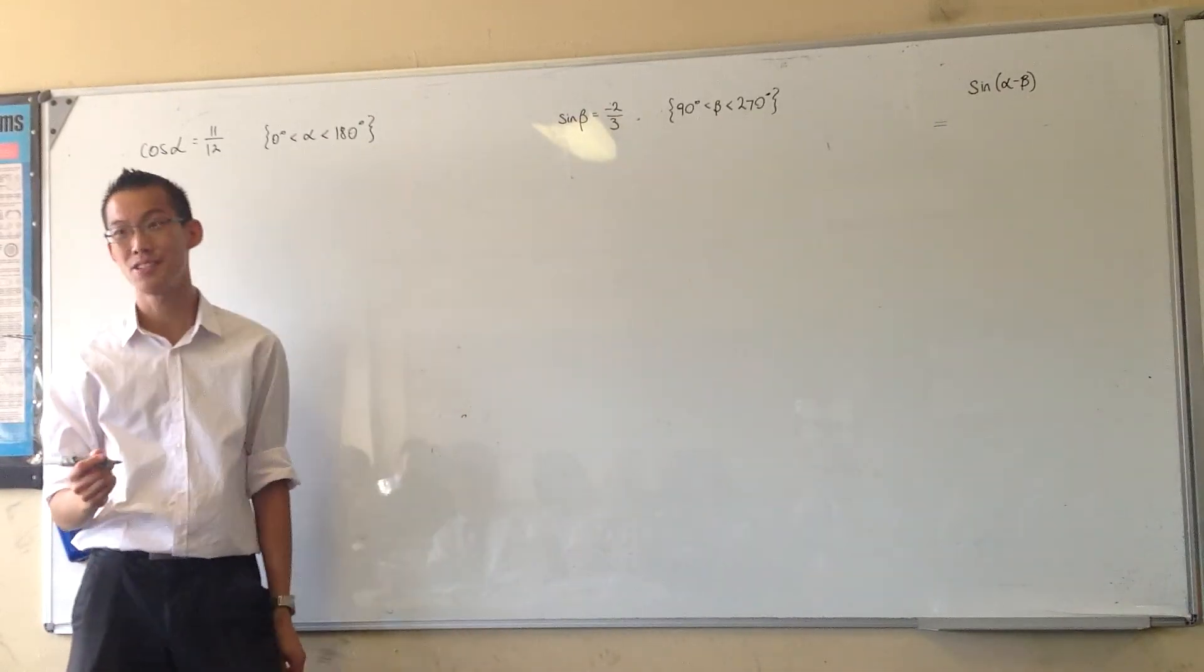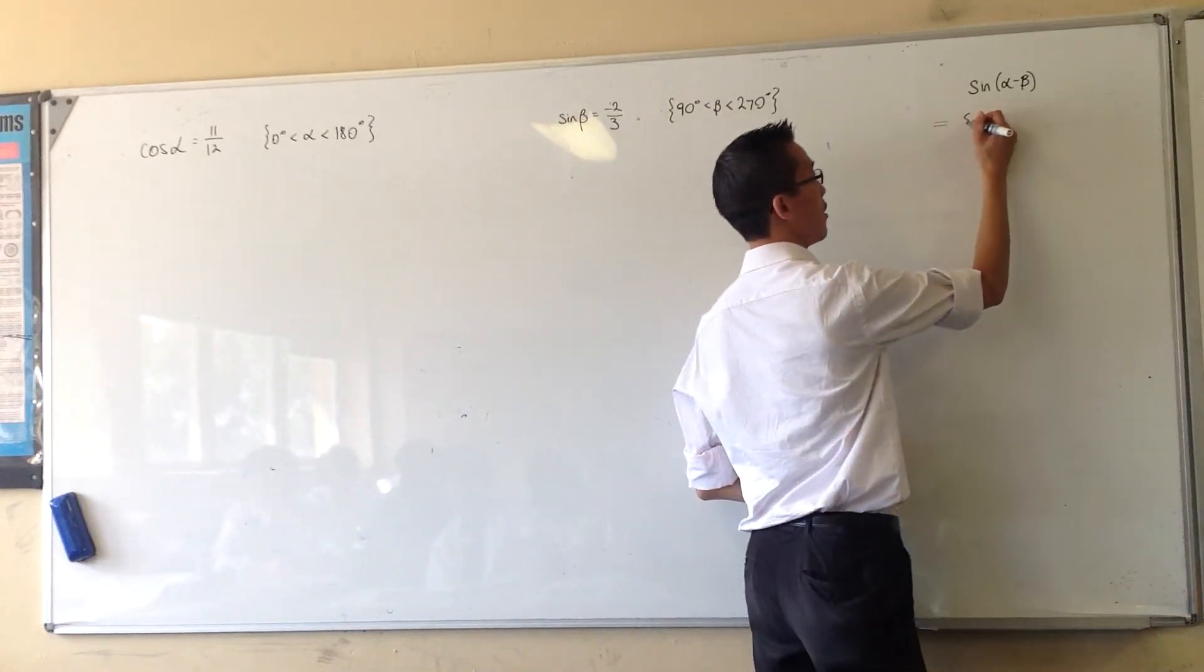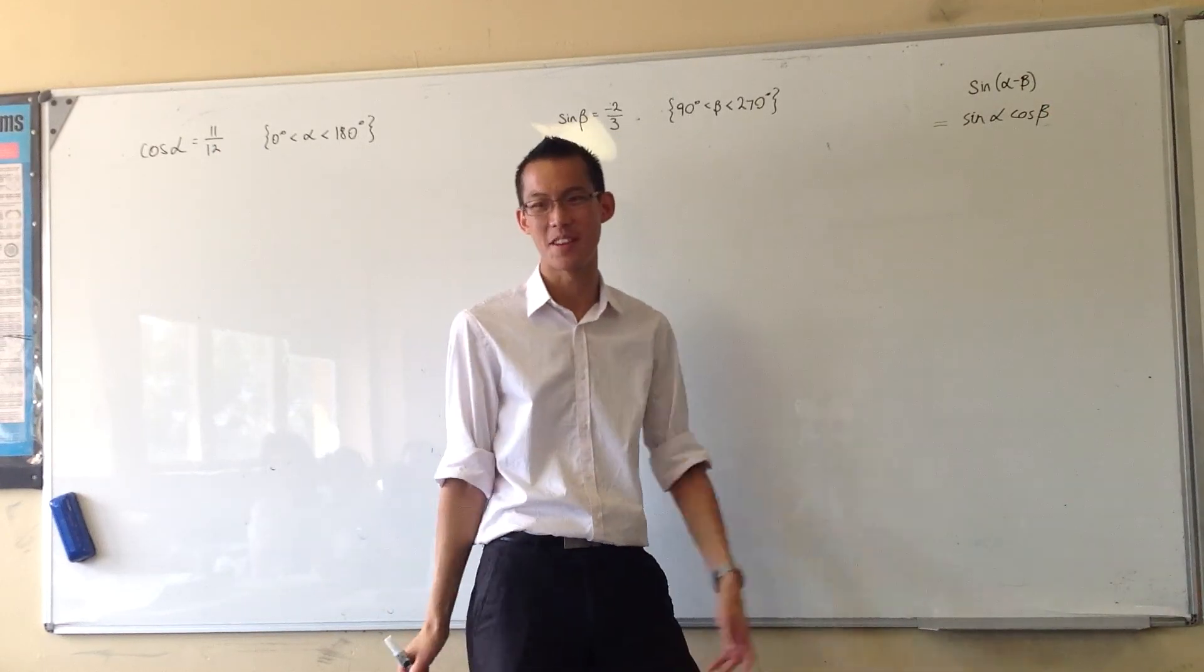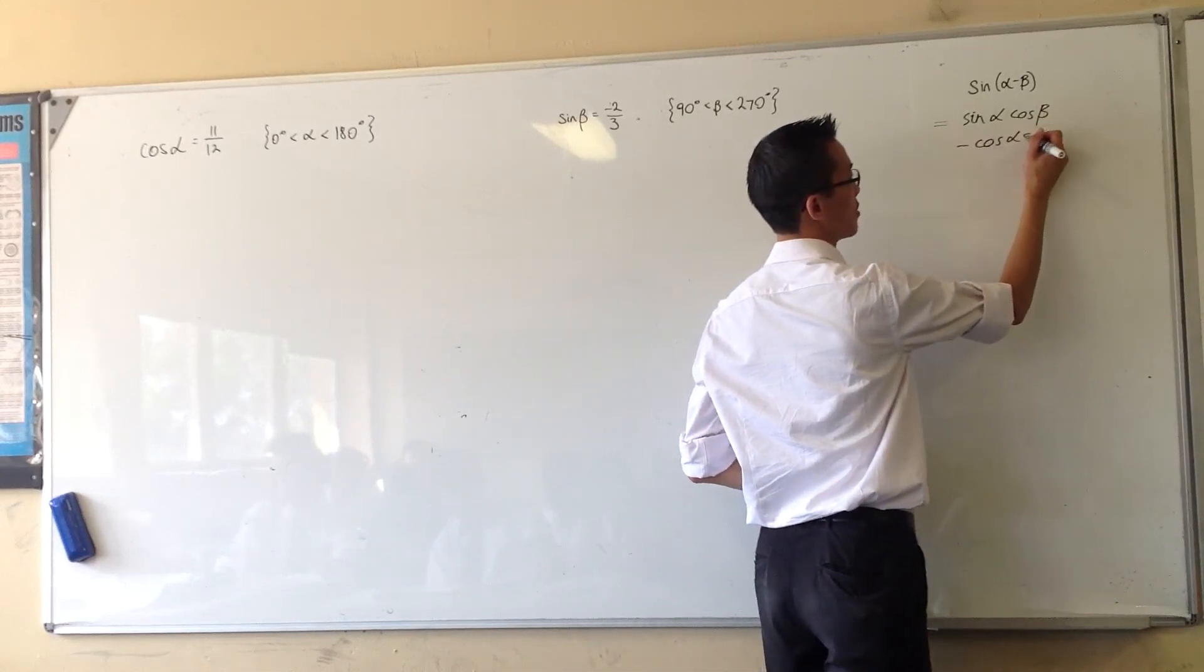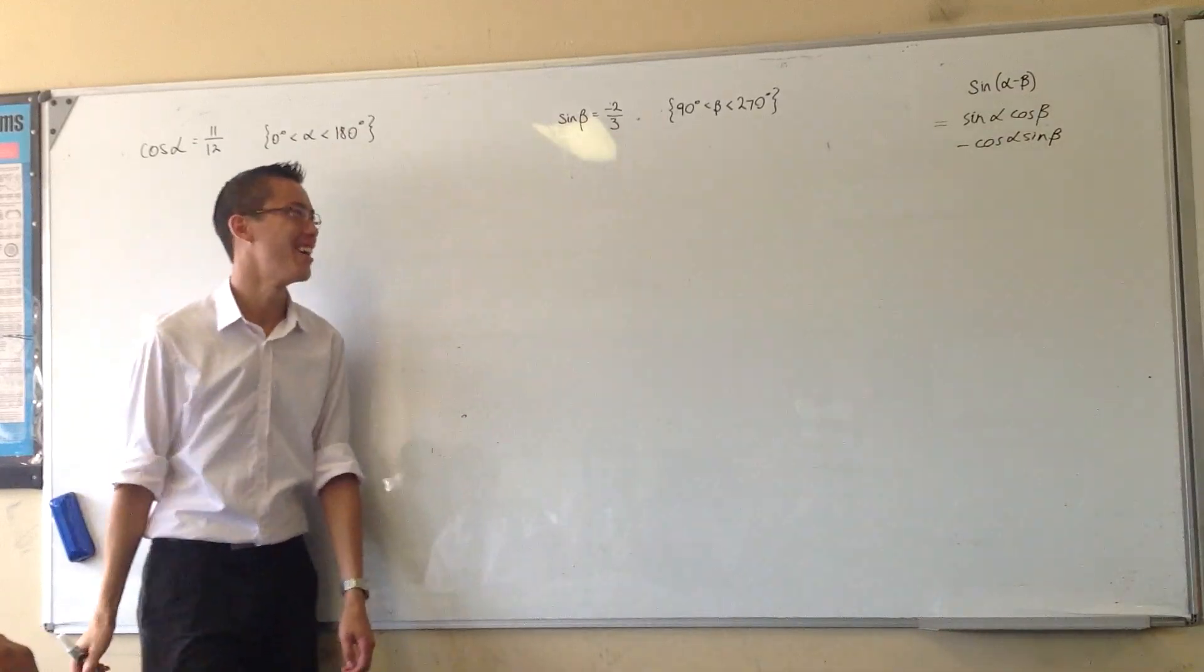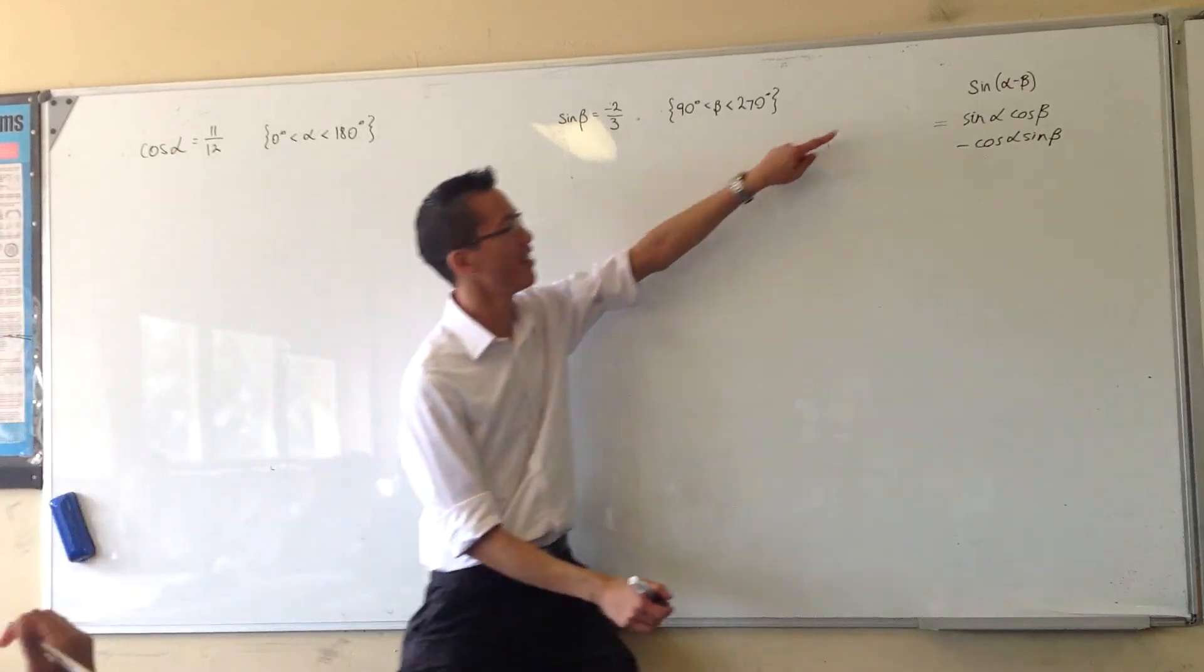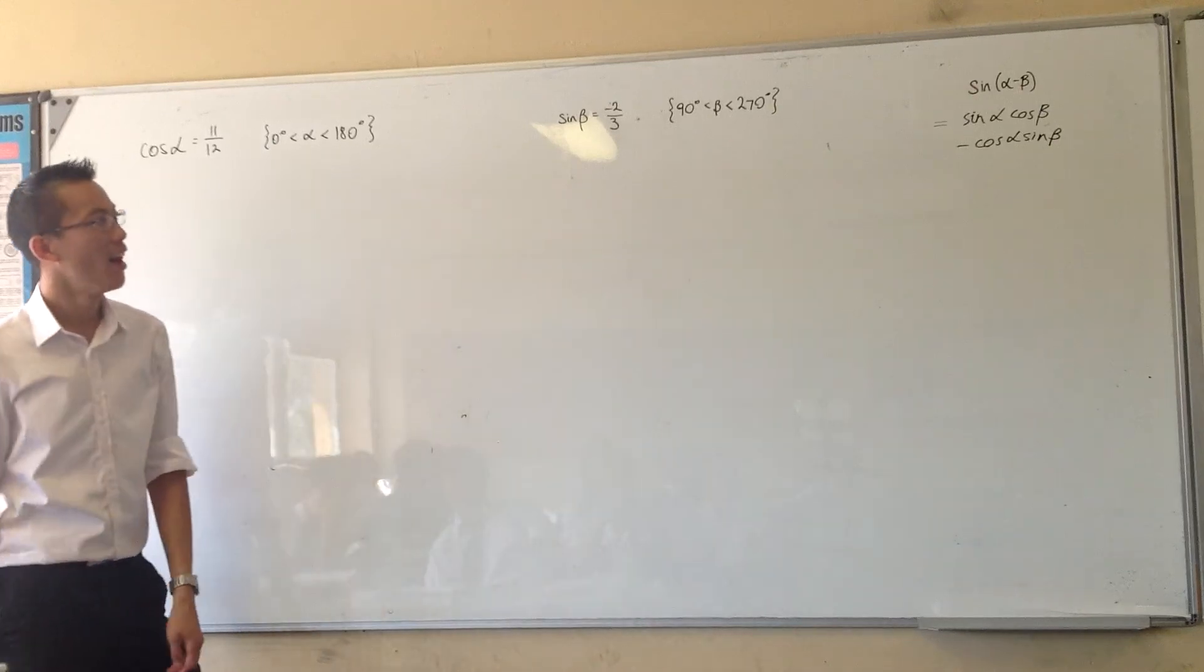So before we dive into working on this, you have to remember what the expansion is. What is the expansion of sin(α - β)? Sine alpha cos beta, and then sine retains sine, right? So minus goes into a minus, and then you switch the functions. Sine retains the sine. There it is.